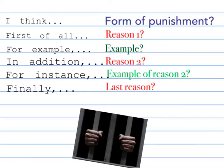Now I'm going to show you how to structure your paragraph logically — how to explain your reasons and give examples, step by step. We'll start with giving your opinion on the topic. The topic is forms of punishment. Which form of punishment did you choose? I chose jail time. So I will start my sentence with: I think jail time is the right form of punishment.